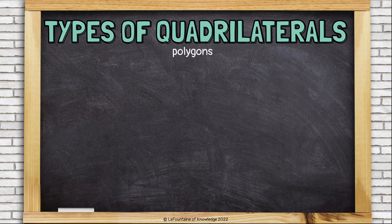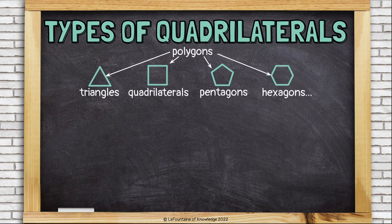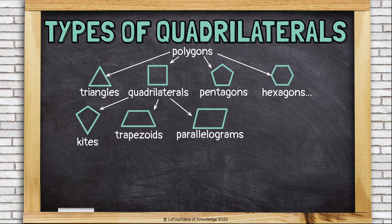Let's take a look at polygons. Polygons might include triangles, quadrilaterals, pentagons, hexagons, and even octagons. Polygons are shapes that have three or more straight sides. Looking at quadrilaterals — four-sided polygons — we have three options: kites, trapezoids, and parallelograms. This is all based on whether or not the opposite sides are parallel. Kites have no parallel opposite sides. Trapezoids only have one set of opposite parallel sides. Parallelograms have two sets of opposite parallel sides.